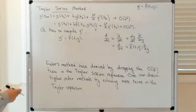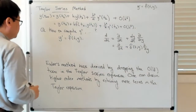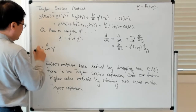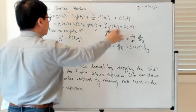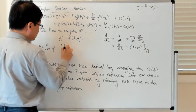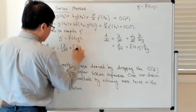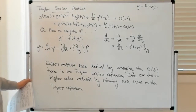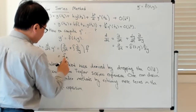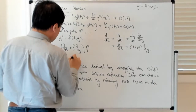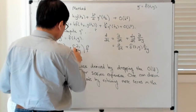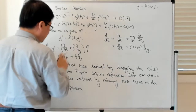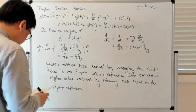So this total time derivative operator looks like partial with respect to time plus f(t,y) times d/dy. Now we're in a position to apply it. d/dt of y prime is of course y double prime — the thing we're trying to compute to get the next higher order term in the Taylor series. Expanding the total time derivative operator and applying it to f, suppressing the dependence on t and y, this gives f_t plus f times f_y, where the subscript denotes a partial derivative. So f_t plus f·f_y is the next term.